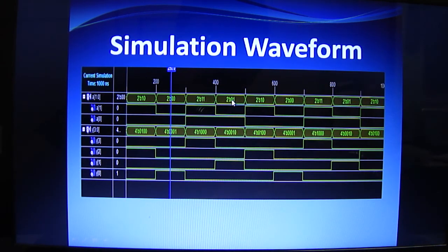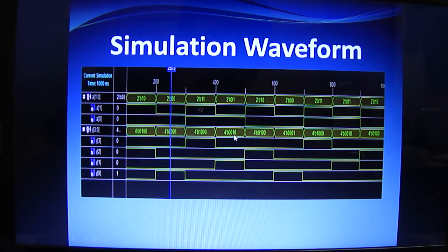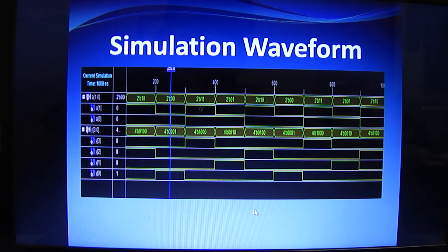Here we are writing 2'b because a 2-bit binary number is input, and here we are writing 4'b because the output is a 4-bit binary number.